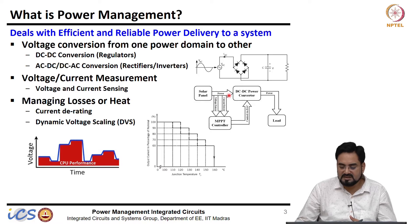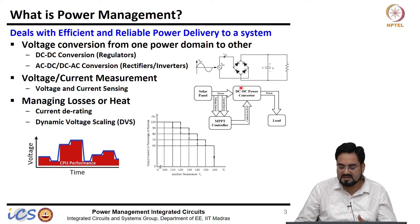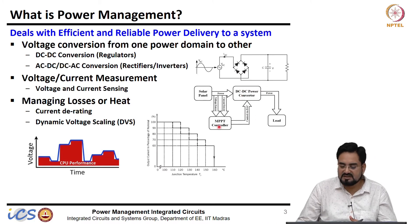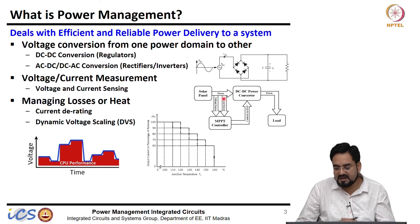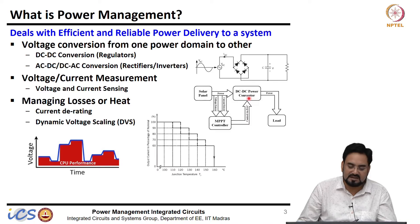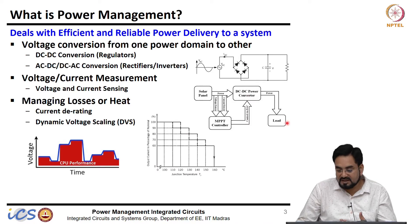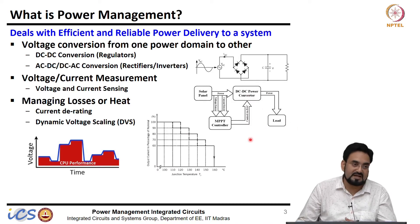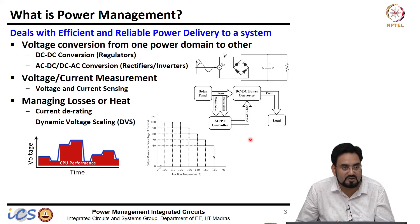The MPPT controller drives the DC-to-DC converter and, based on the MPPT point, decides what load current should be supplied, or if you are charging a battery, at what current the battery should be charged.